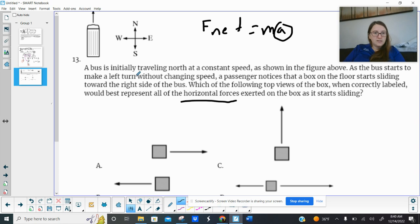Now, it says that the bus makes a left turn without changing speed. So going to my little picture here, that means it's going to go this way, right? Now, what that means is the center of my rotation is here. So if I have a box sitting here,